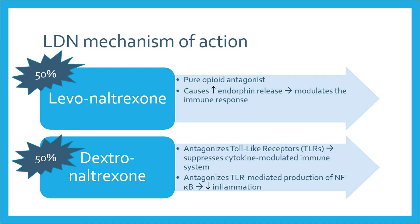It was recently discovered that naltrexone is a 50-50 mixture of two different shapes, or isomers, each with a very distinct biologic function. Levonaltrexone is a pure opioid antagonist and binds to opioid receptors, causing an increase in endorphin release which modulates the immune response. Dextronaltrexone, the other isomer, antagonizes toll-like receptors, or TLRs, which are a class of proteins that play a key role in the immune system. Suppressing the cytokine-modulated immune system is important not only for immunity, but also inflammation.